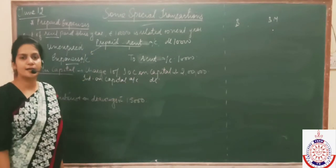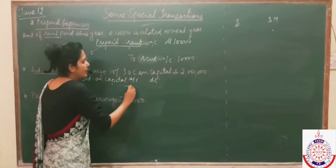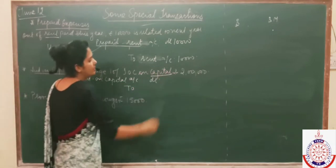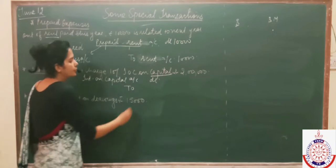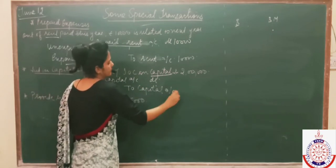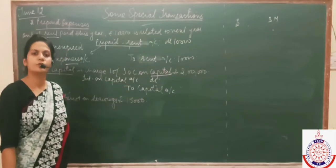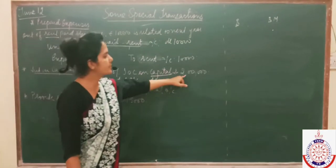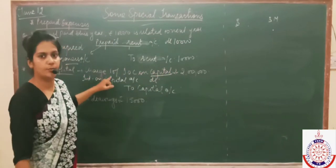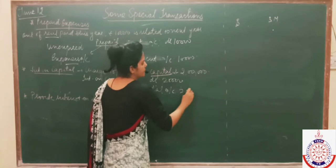All expenses are debited. We are paying interest on capital, so we need to credit capital. The entry becomes: interest on capital account debited to capital account. If capital is 2 lakh and interest is 10%, then interest becomes 20,000.